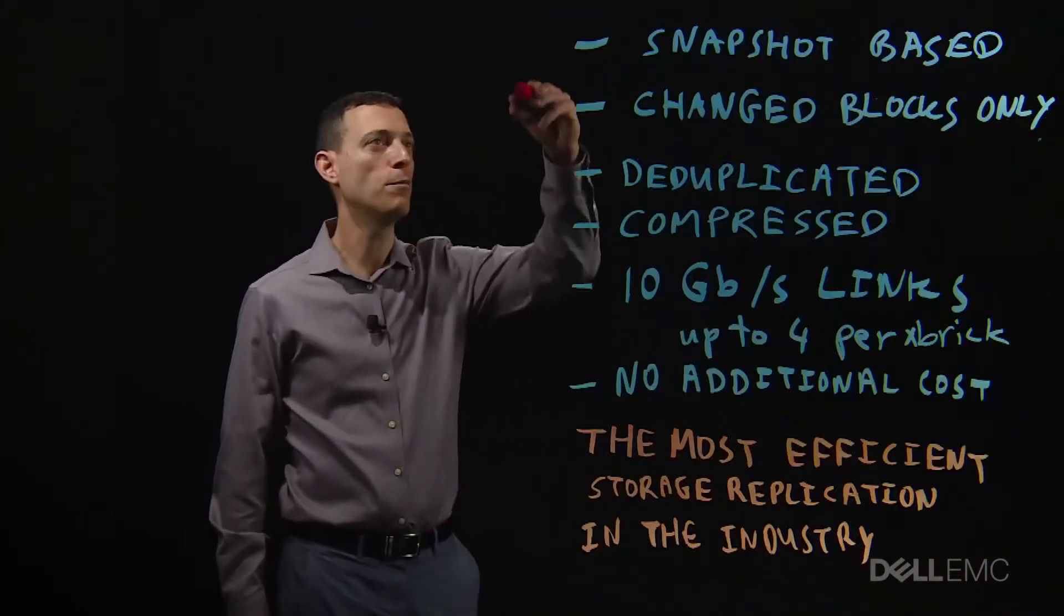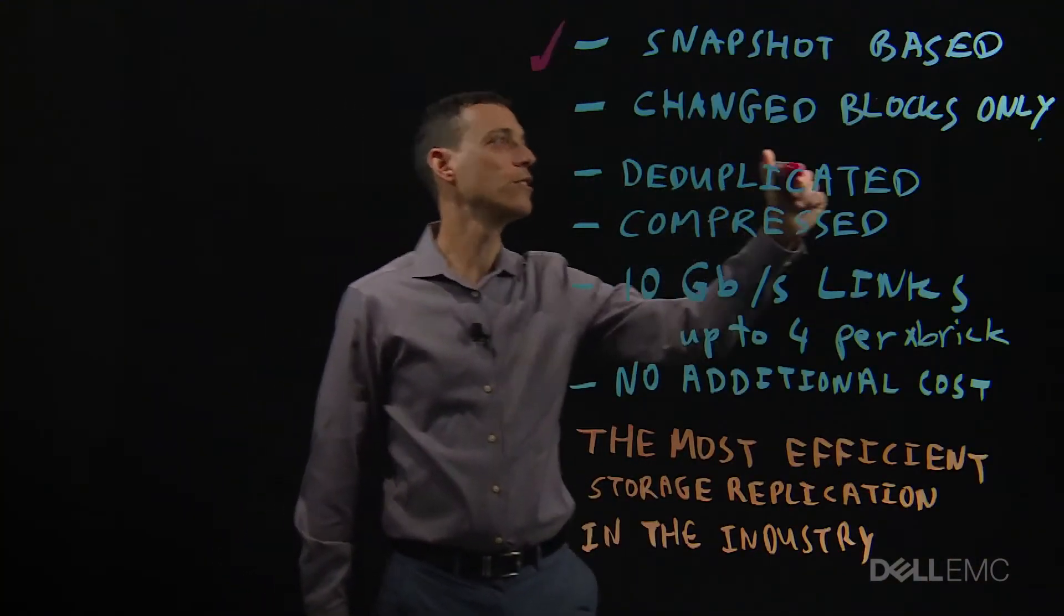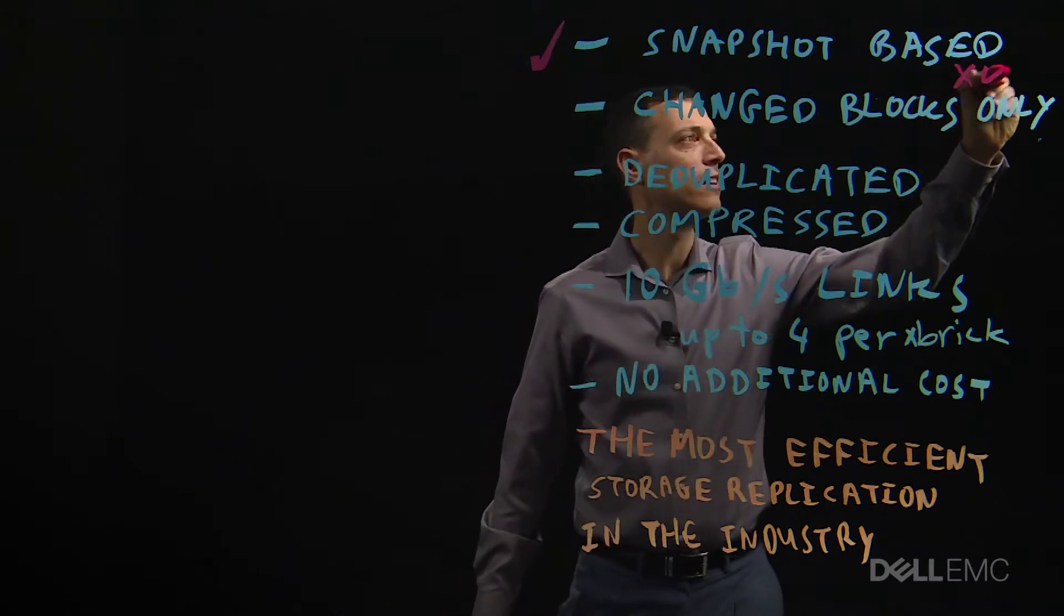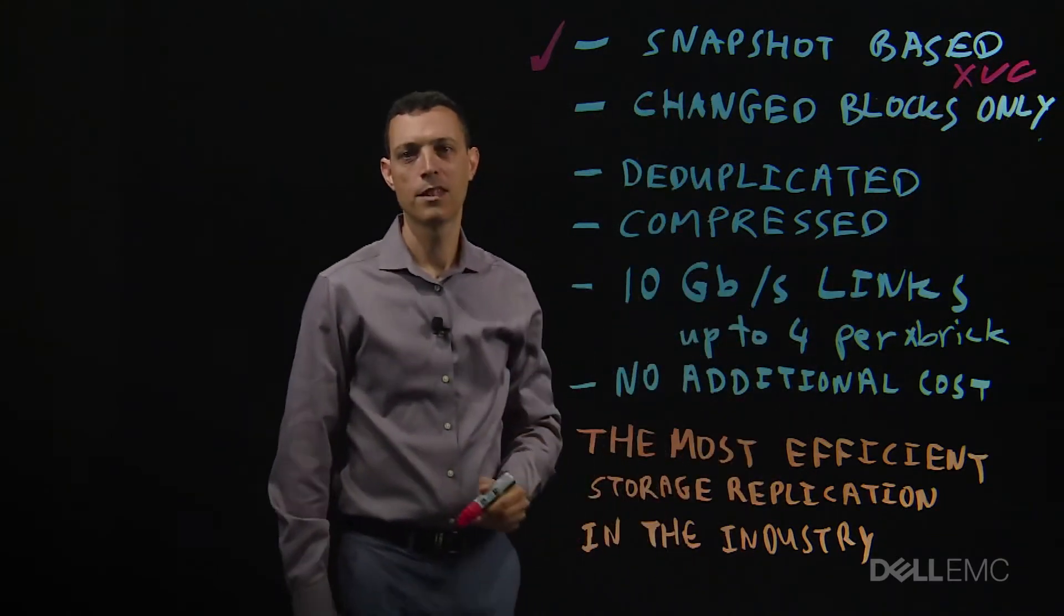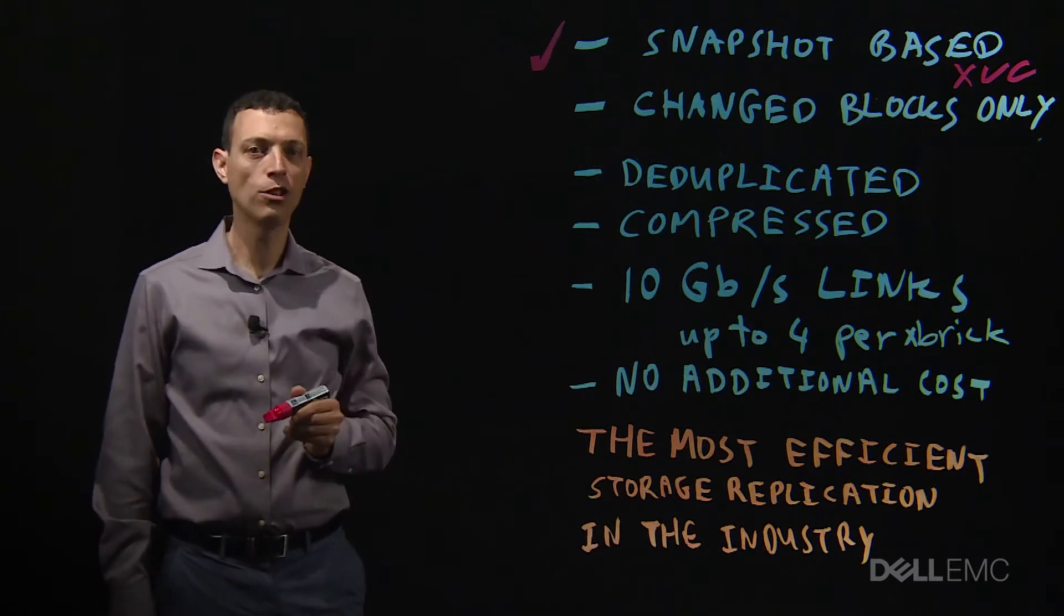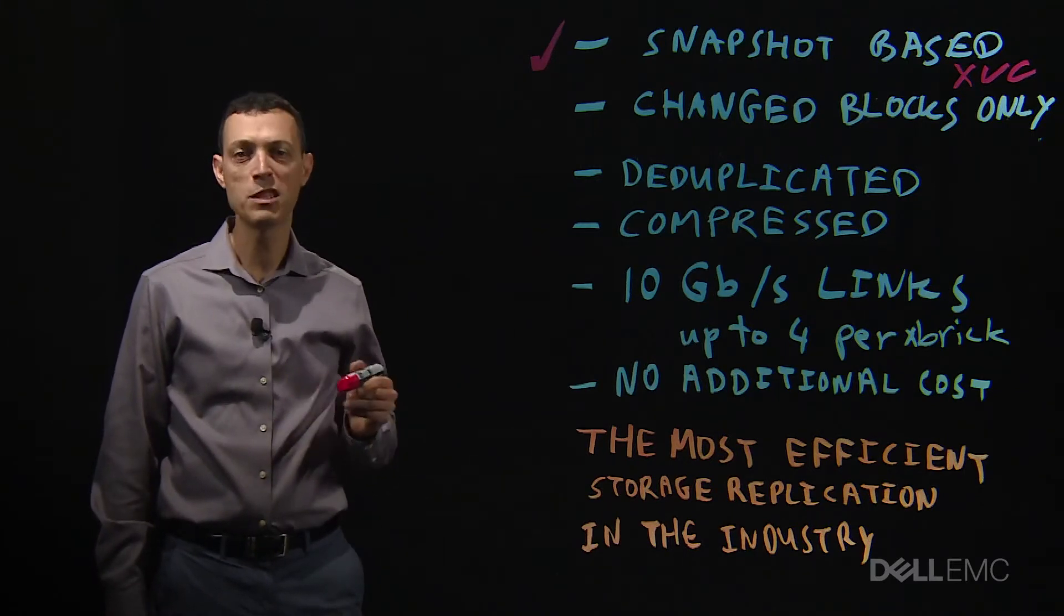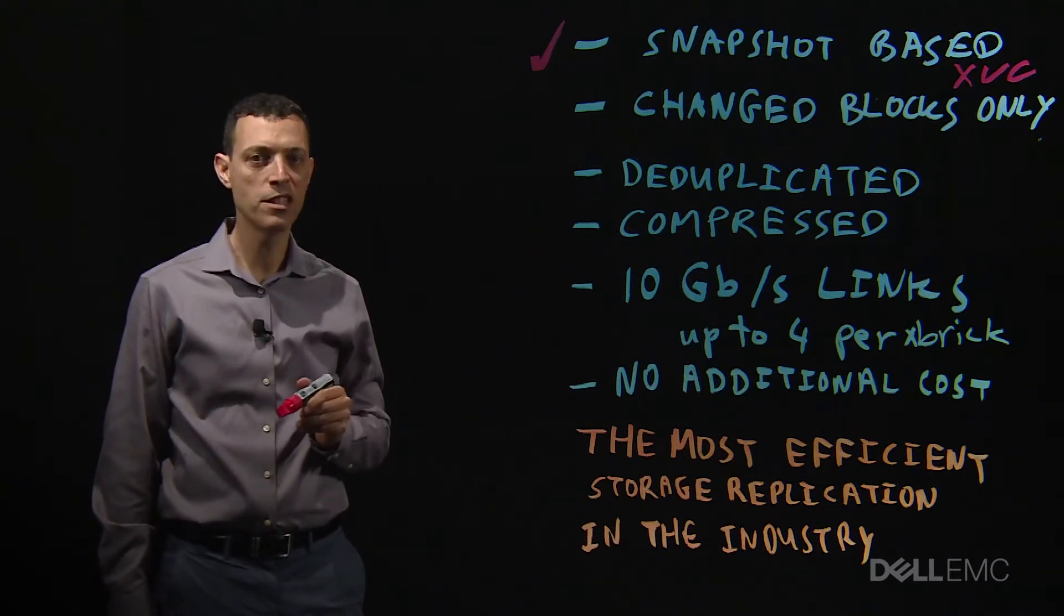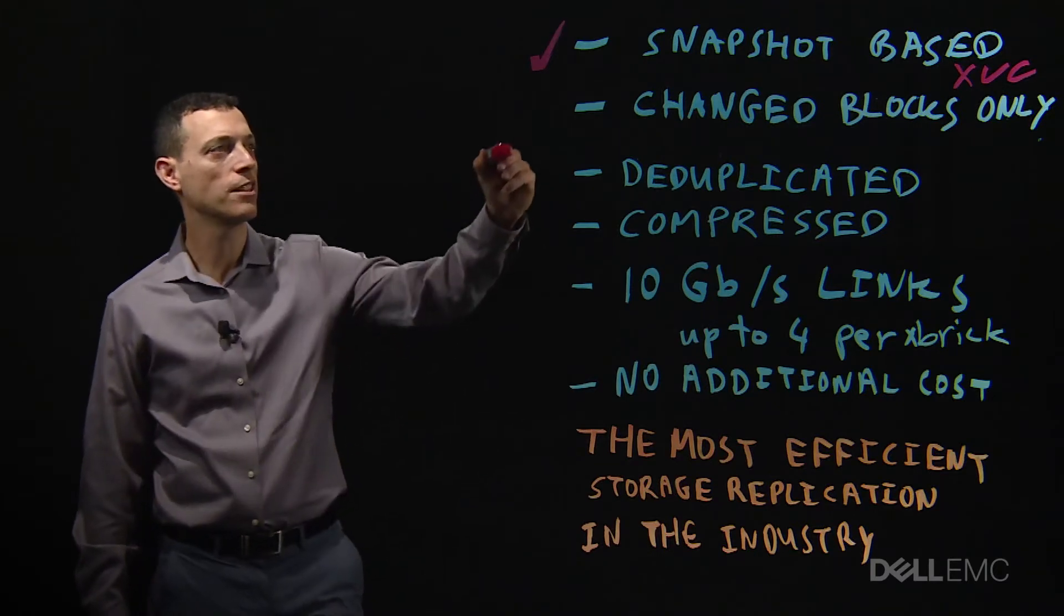It is snapshot-based, so we are using XtremIO virtual copies, also known as XVC. We transmit the changed blocks only. We review and transmit only data blocks written since the last replication cycle.